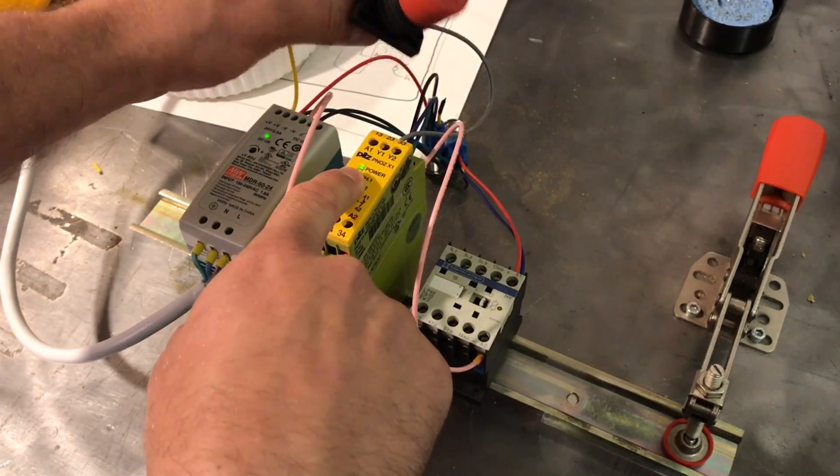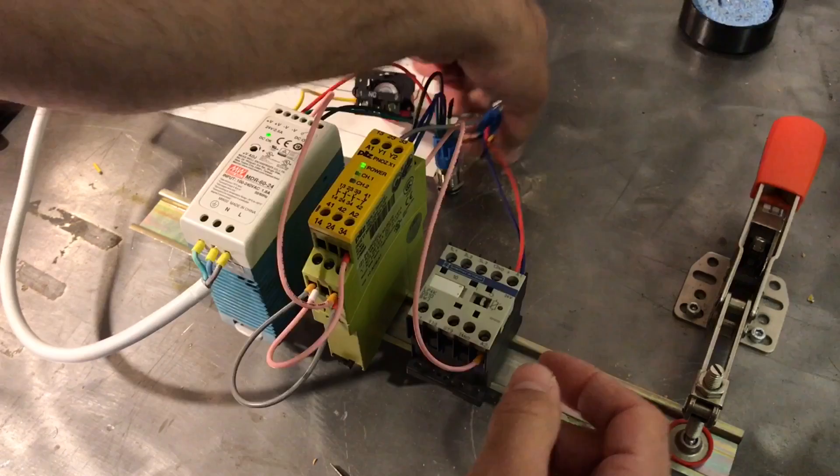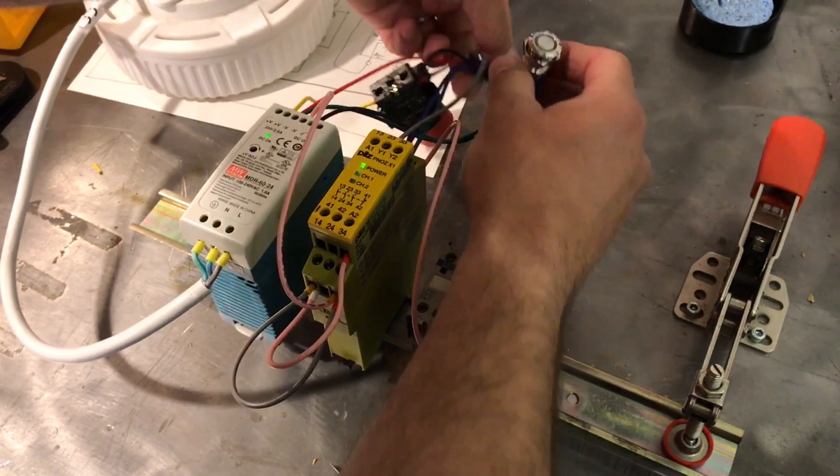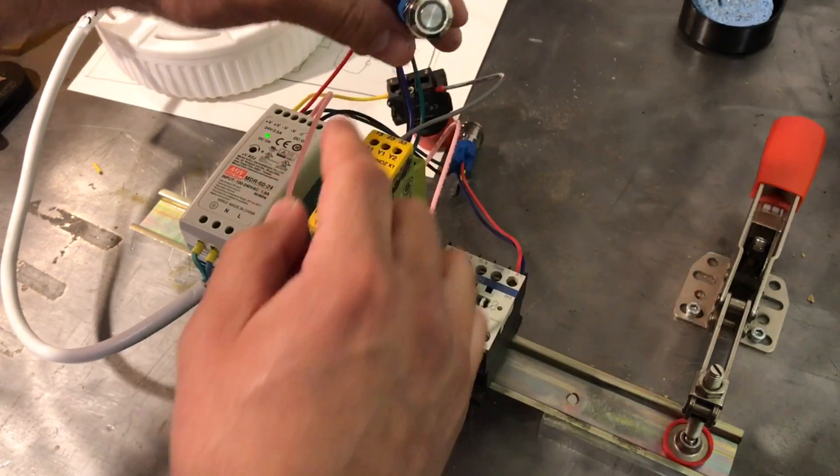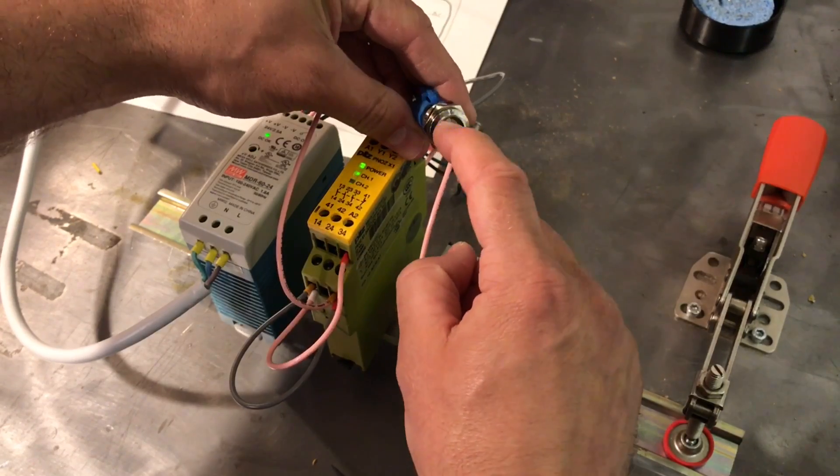When I reset the e-stop, power light comes on. I then need to reset it, so the reset button which is this one.